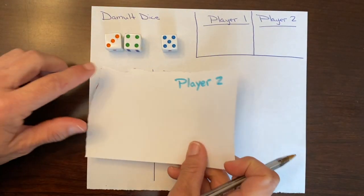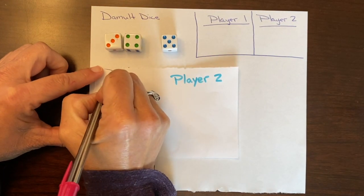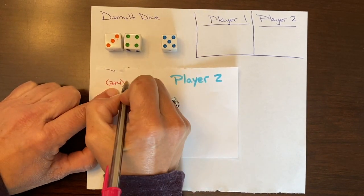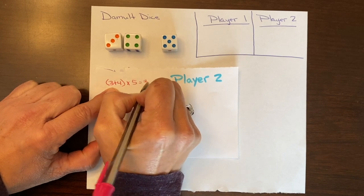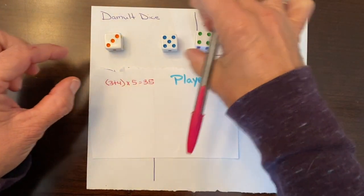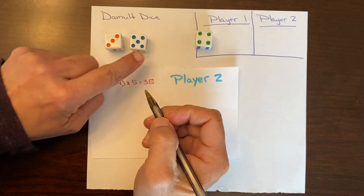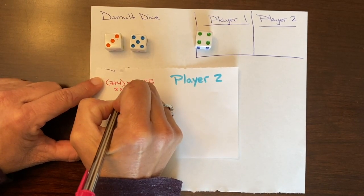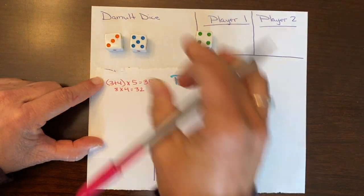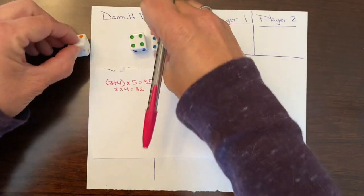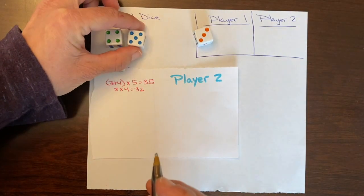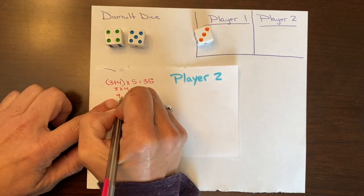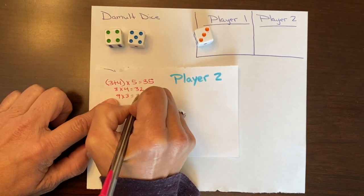Okay, so I have 3 plus 4. I do in parentheses first. That's 7. 7 times 5 is 35. I can also do 3 plus 5. And instead of writing the whole equation out I can just do 8. 8 times 4 is 32. And my last one is 5 plus 4 is 9. I'm just going to write that to hold this down so that way I can visually see it. And 9 times 3 is 27.